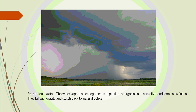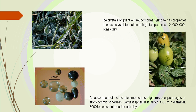Rain is just liquid water. This water vapor comes together on impurities that are up there in the sky, and we need those impurities so that it can crystallize and form snowflakes. One of the things we've found now is that some of those impurities are actually micrometeorites coming in from the solar system. If you took a glass of rainwater and put a magnet in there, you would see all these micrometeorites attracted to it.